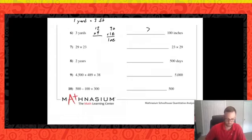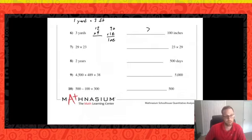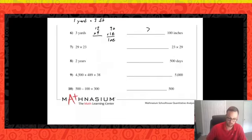Number seven: 29 times 23 versus 23 times 29. We've reinforced several times now that the order of a multiplication problem does not matter as long as the numbers are the same — the commutative property of multiplication. So those are equivalent.